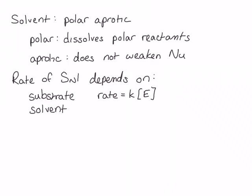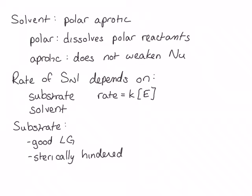A good substrate for an SN1 reaction should have a good leaving group, and, just like the SN2 reaction, the substitution of the electrophilic carbon is important in determining the rate. However, we see a trend that is the opposite of what we see with SN2. A more sterically hindered electrophilic carbon speeds up the rate of an SN1 mechanism. To understand why this is, we need to look at the energetics of the SN1 mechanism.